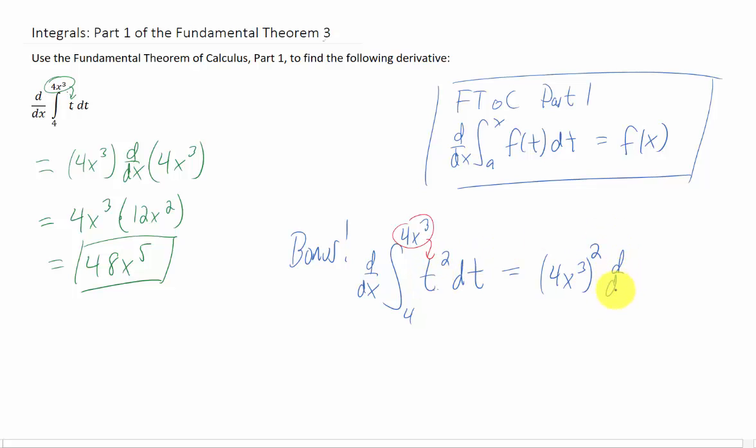And then the chain rule says we have to multiply by the derivative of 4x cubed. So how do we square this function? We square the 4, we square the x cubed. What's the derivative of 4x cubed? It's still 12x squared.